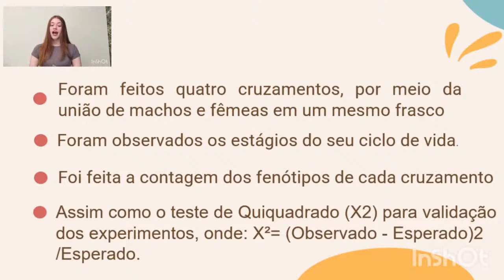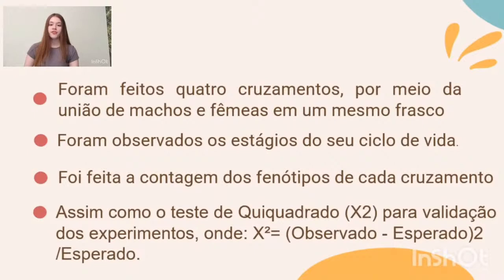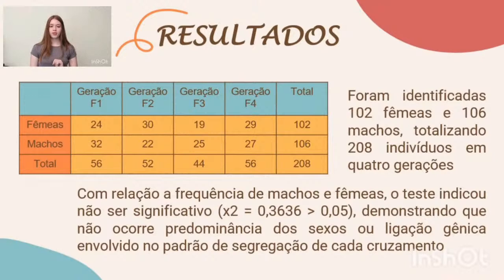Após isso, foi feito o teste Qui-quadrado para validação dos experimentos e discussão dos resultados. Como observado na tabela, foram feitas contagens dos fenótipos de cada cruzamento, identificando 102 fêmeas e 106 machos, totalizando 208 indivíduos em 4 gerações. O teste Qui-quadrado indicou não ser significativo, demonstrando que não há predominância dos sexos ou ligação gênica no padrão de segregação de cada cruzamento.